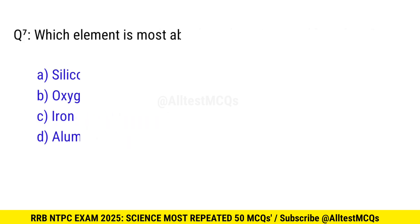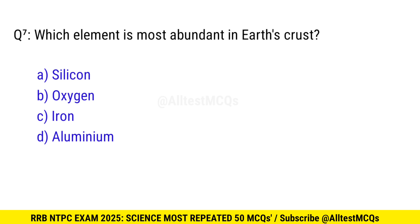Question 7. Which element is most abundant in the Earth's crust? Right option is B, oxygen.